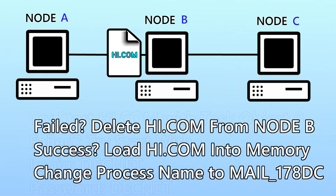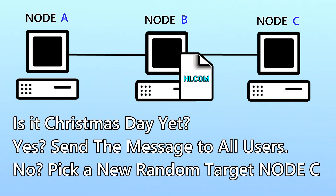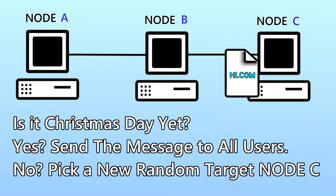If it was unable to start, it would delete itself from the target machine. If the target node did run the script, it was loaded into the machine's memory and disguised itself under the process name mail-178DC. It then moved the Hi.com file to a hidden location. The process checked the system clock, and if the time was past the start of Christmas day, it sent a Christmas greeting to all users on the machine. After sending the message, it deleted all copies off the machine and stopped execution.